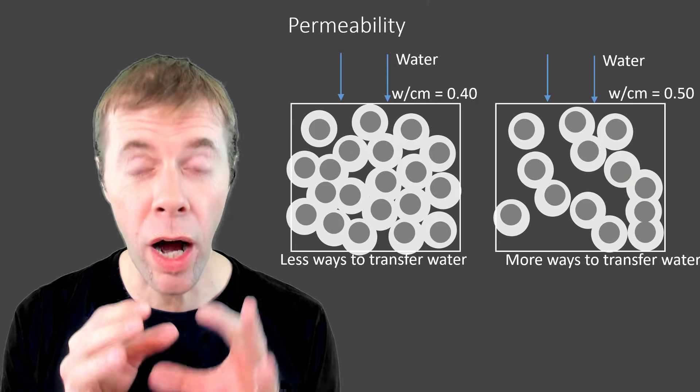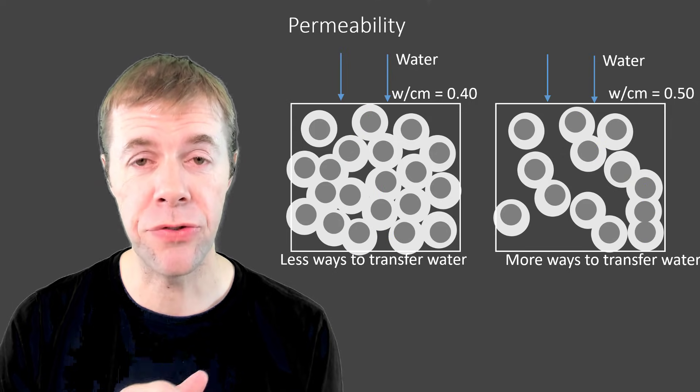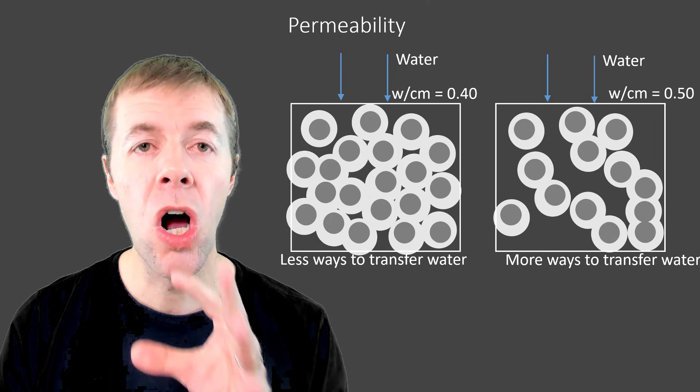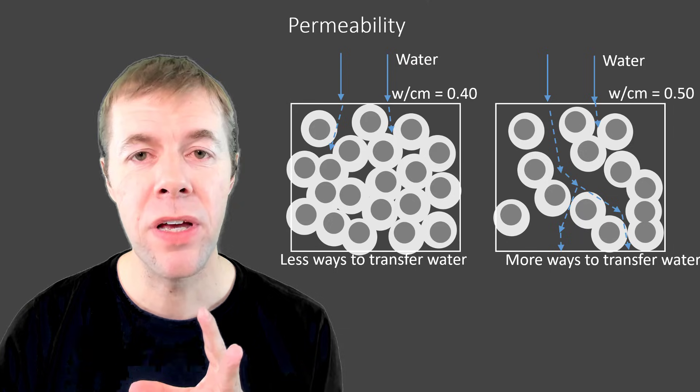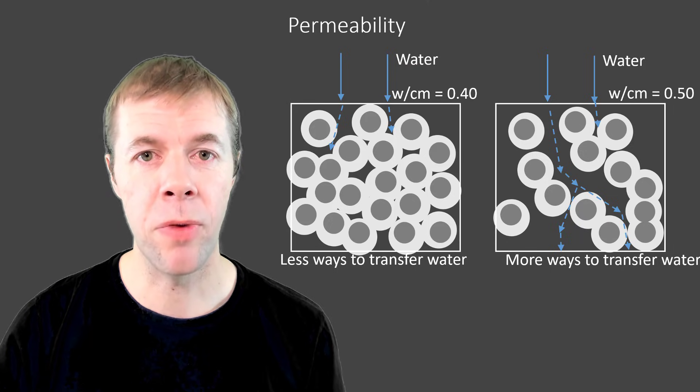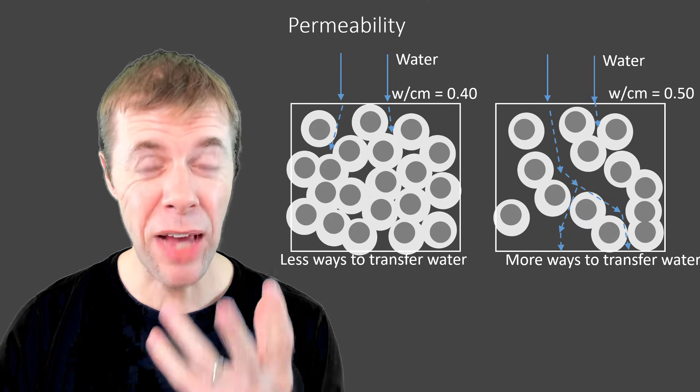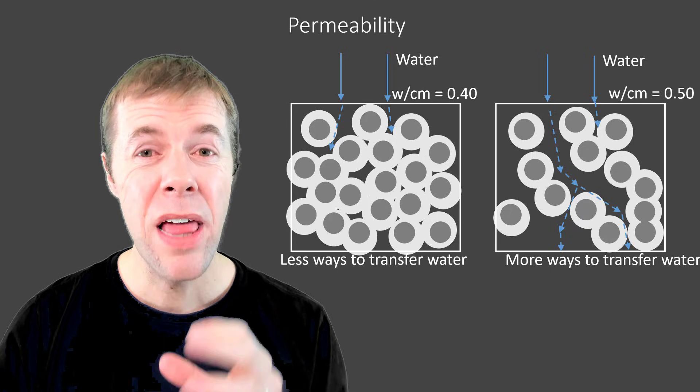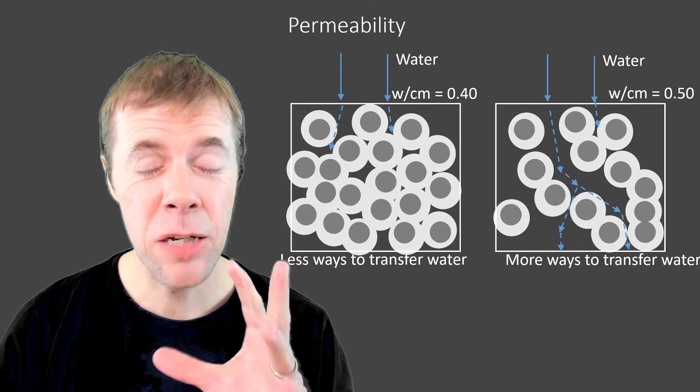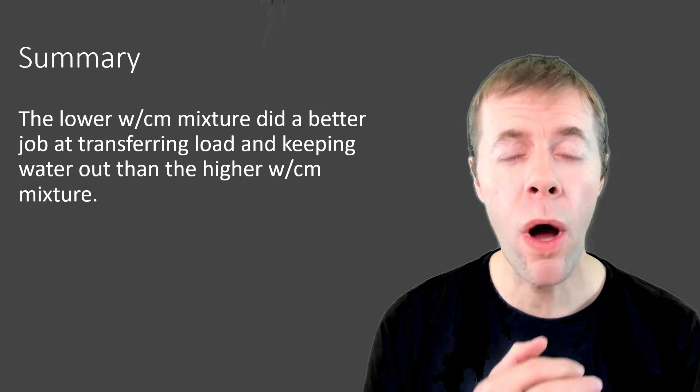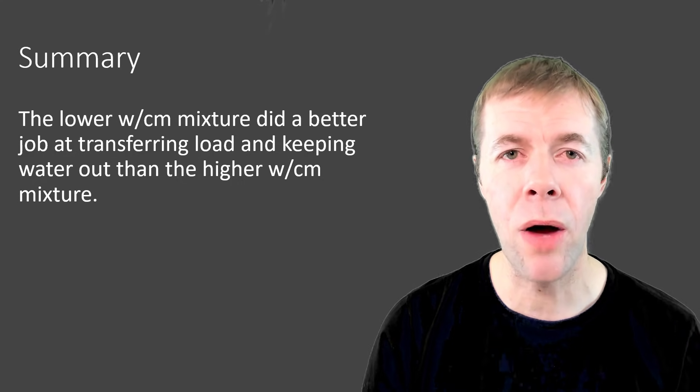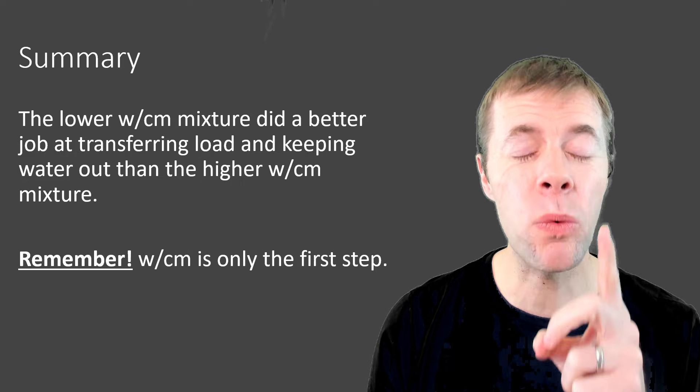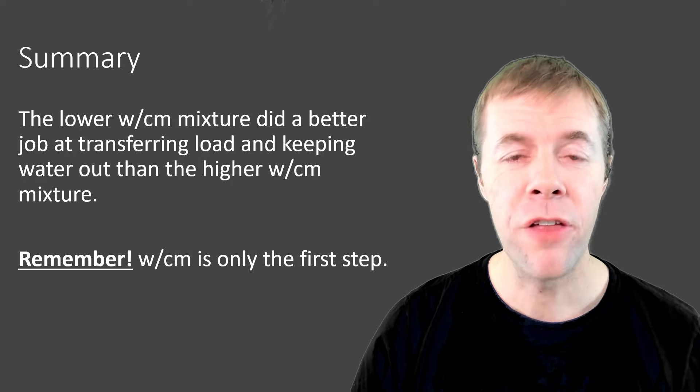But now if I was going to try to get water to go through each one of these systems, it's much harder to make the water go through the system on the left than it is on the right. And keeping these outside chemicals out of your concrete, that is the key to making it long lasting. So the lower water cement ratio does a better job at transferring load and also keeping water out. And remember, water cement ratio is only the first step.